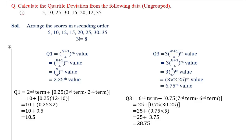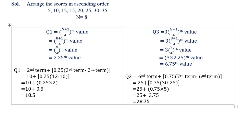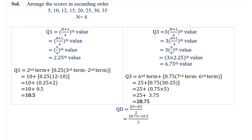Now we have the value of Q3 as 28.75. Now we need to find QD. QD is equal to (Q3 − Q1) / 2, that is equal to 9.125.